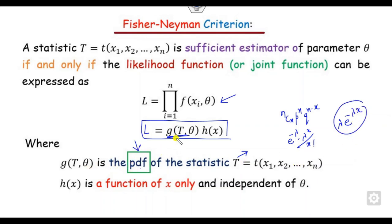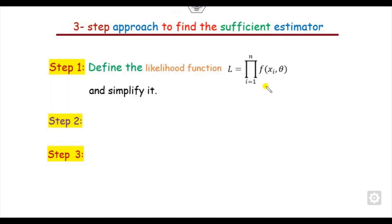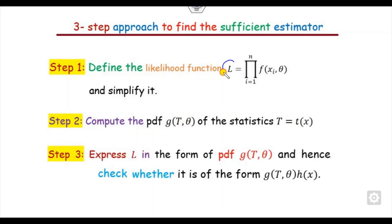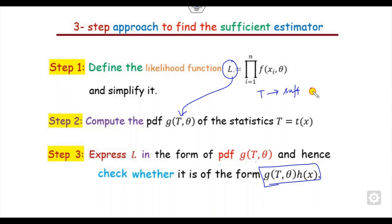Our target is to find the PDF of the statistic T. The three-step rule is: Step 1 — start with the likelihood function L and simplify. Step 2 — find the PDF of the statistic T. If T is given as binomial or normal, you can find g easily; if not, we will see how. Step 3 — express L in terms of g. If we can write L in terms of g (the PDF of T), then T is the sufficient estimator of theta; otherwise not.